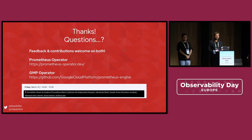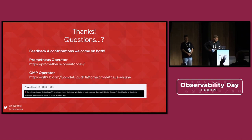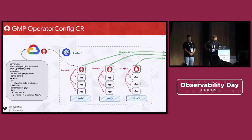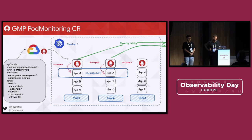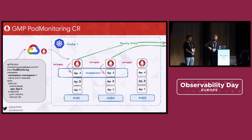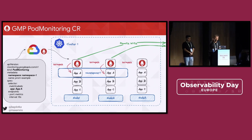Thanks for the presentation. My first question is about the pod monitor — in the Prometheus operator you can do relabeling and metric relabeling. Are you able to support relabeling config on the pod monitor provided by the GMP operator? You have metric relabeling — you can do whatever you want after the metric is scraped. But for relabeling before scraping, which is used for service discovery, we log that in and offer a simplified, opinionated filtering with add-label and remove-label. You can't do all the magic of full relabeling.